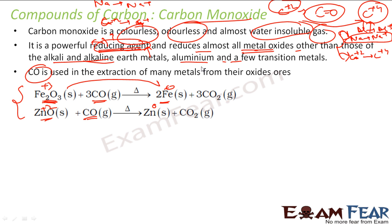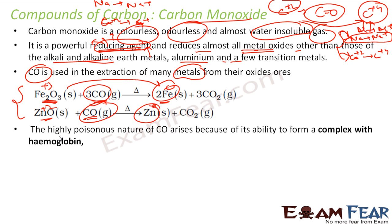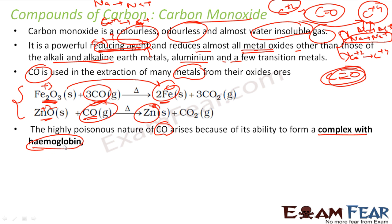These metals have to be reduced to their metal form, and carbon monoxide is a good and cheap reducing agent. Please note: carbon monoxide is highly poisonous. Carbon monoxide as such is a very simple compound, but it has the ability to form a complex compound with hemoglobin. When it combines with hemoglobin, it forms a very dangerous compound, which is why it is harmful.